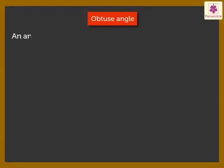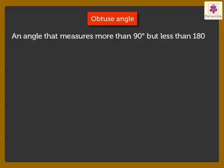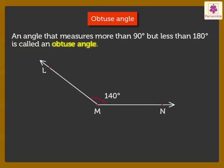Coming to an Obtuse Angle. An angle that measures more than 90 degrees but less than 180 degrees is called an Obtuse Angle. Here, angle LMN measures 140 degrees. So, angle LMN is an Obtuse Angle.